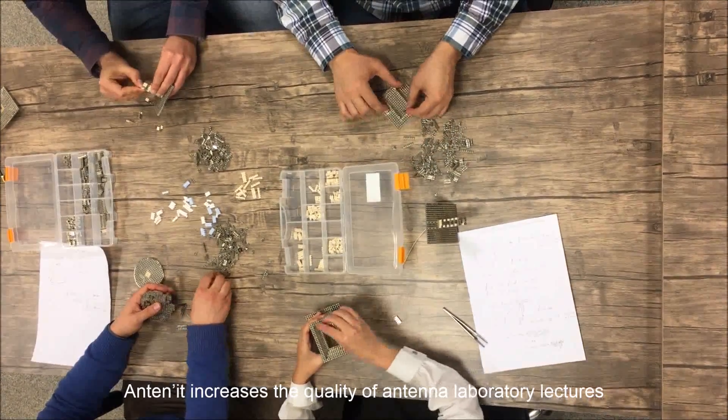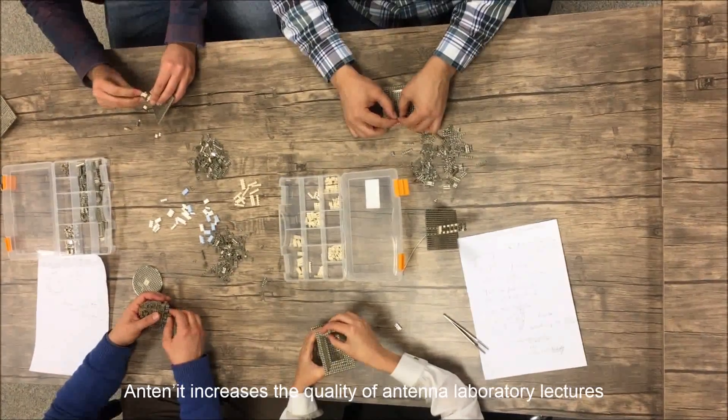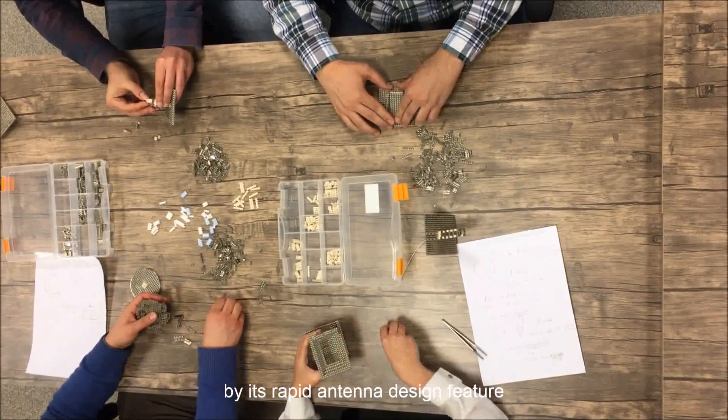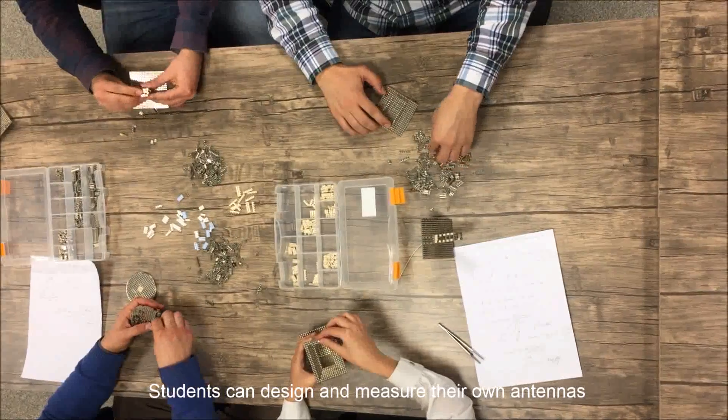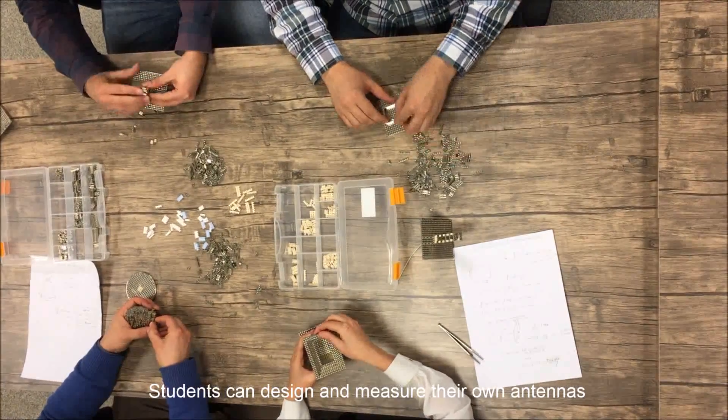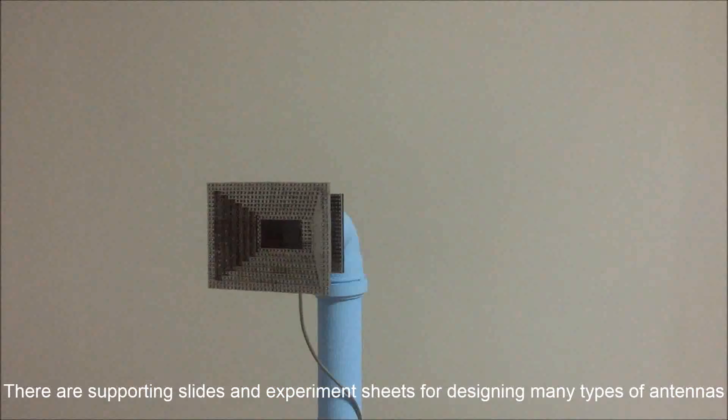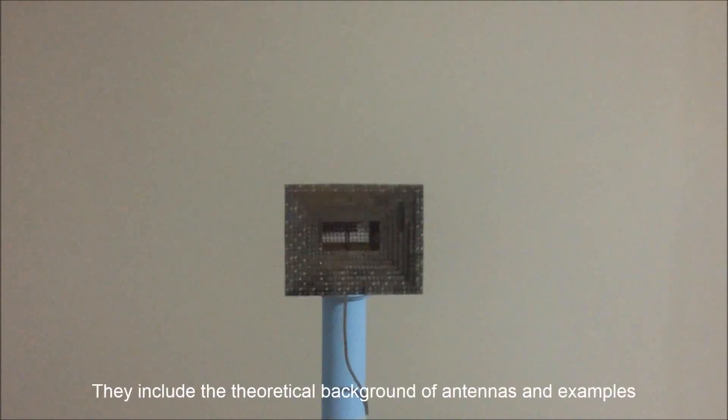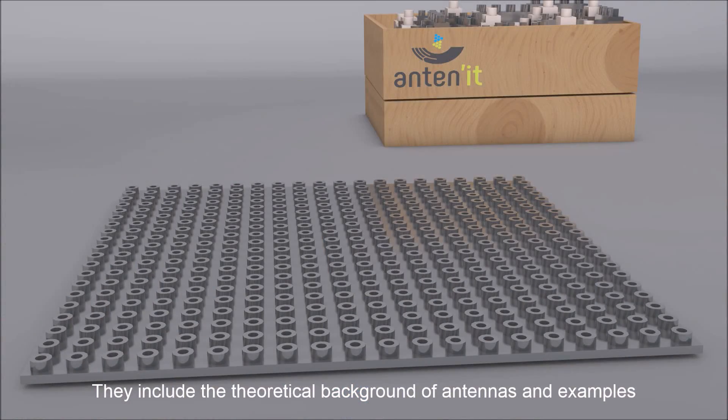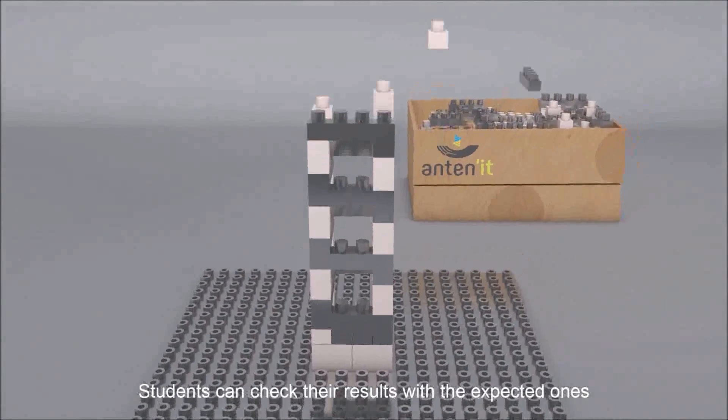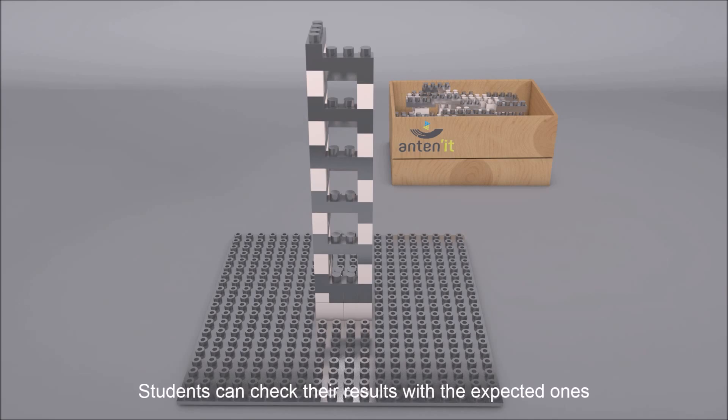Antennate increases the quality of antenna laboratory lectures by its rapid antenna design feature. Students can design and measure their own antennas. There are supporting slides and experiment sheets for designing many types of antennas. They include the theoretical background of antennas and examples. Students can check their results with the expected ones.